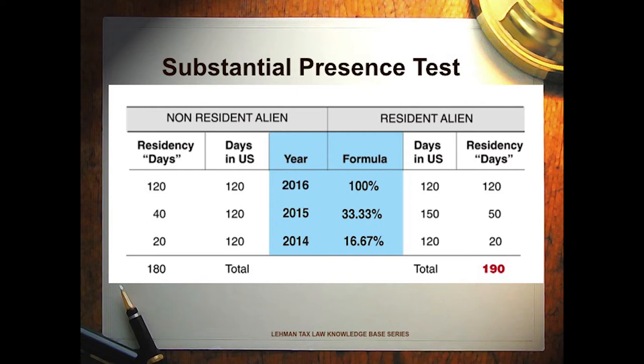Then we go back to 2014 and look at the days spent there, dividing that by six. So for example, if a non-resident alien spends 120 days each year in the United States for 2014, 2015, and 2016, we would have: 120 days in 2016, 40 days from 2015 (120 ÷ 3), and 20 days from 2014 (120 ÷ 6) — for a total of 180 days.